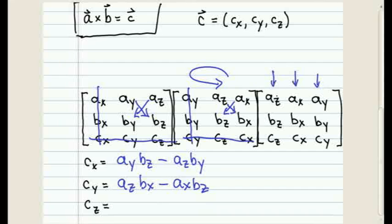We cross off the column and the row corresponding to the location of the unknown element CZ. And again, we multiply across the diagonal and take the difference. So we have that CZ is equal to the product of AX and BY minus AY and BX.